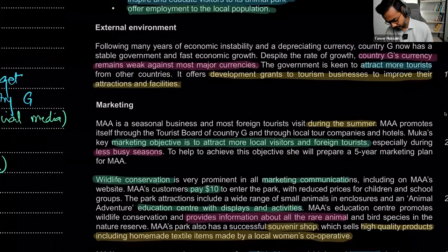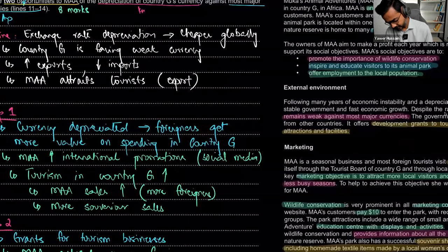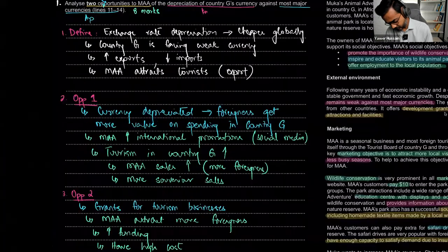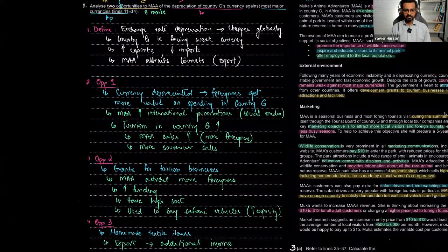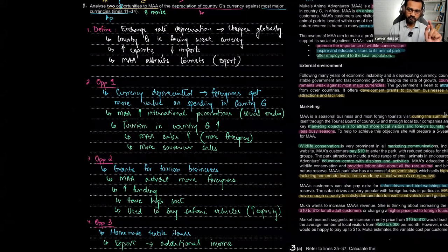So that's how I would answer this eight-mark question — two opportunities, nice and clean. First paragraph connects knowledge and application, then second paragraph for point one, third paragraph for point two, and end it — no evaluation.